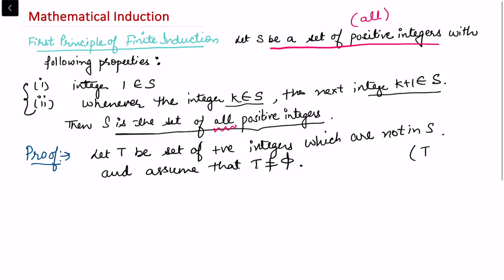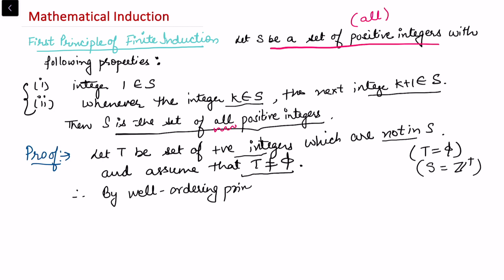We assume that T is non-empty, because if T is empty then there are no positive integers which are not in S, and hence S automatically equals the set of all positive integers. So I am starting the proof with a contradiction — assuming T is a non-empty set of positive integers not in S.